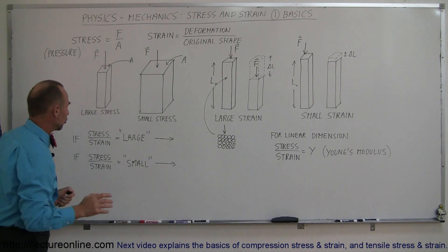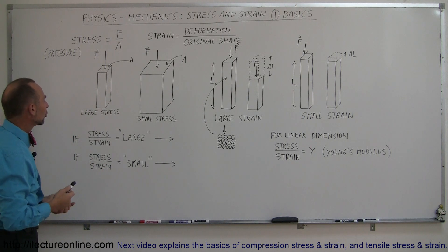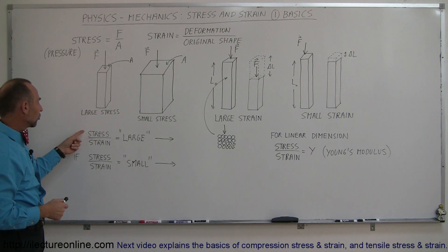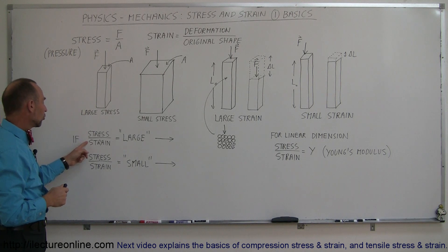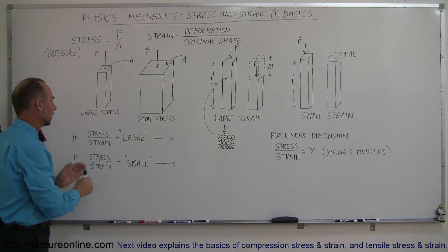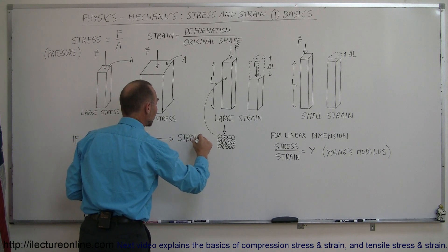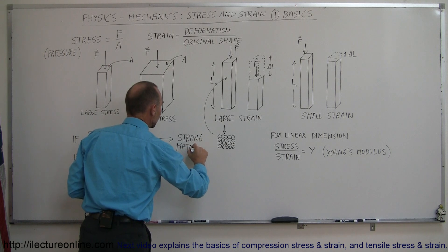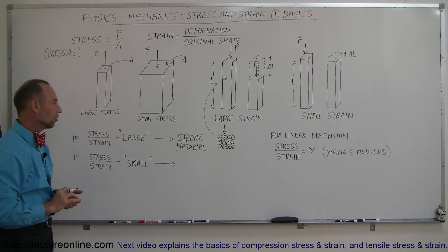If we find the ratio between stress and strain — stress being force divided by area, divided by the strain — that ratio gives us an indication of what kind of material we're dealing with. For example, if we apply a large amount of stress and there's a small amount of strain, meaning just a little bit of deformation when we really push down on the material, that ratio is large. We're dealing with a very strong material — one that does not deform very easily.